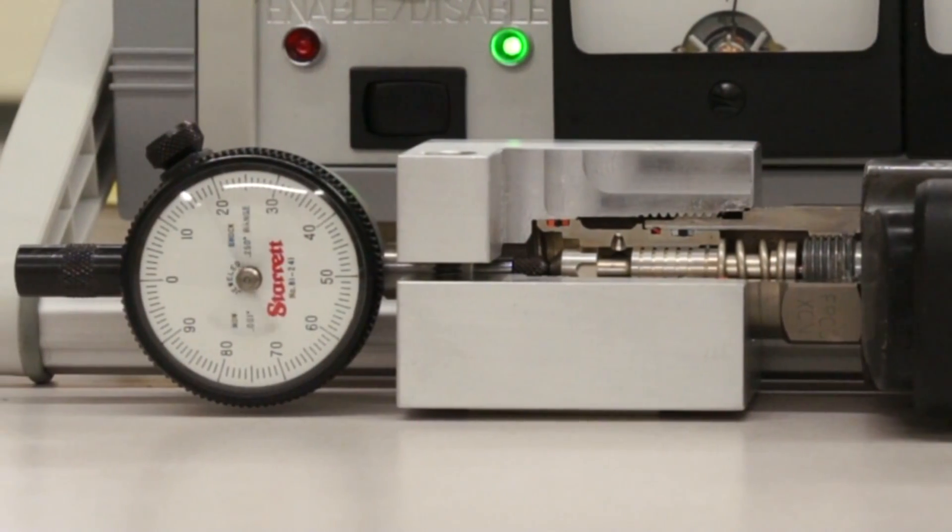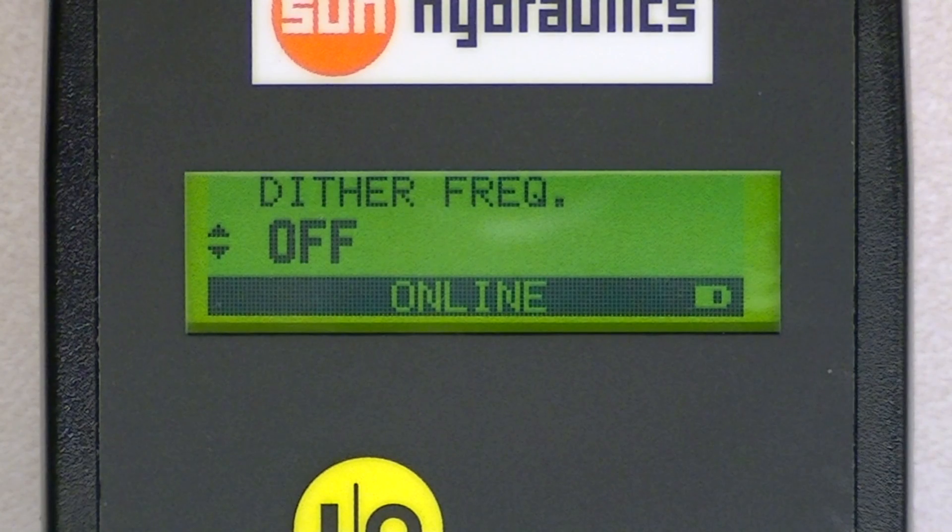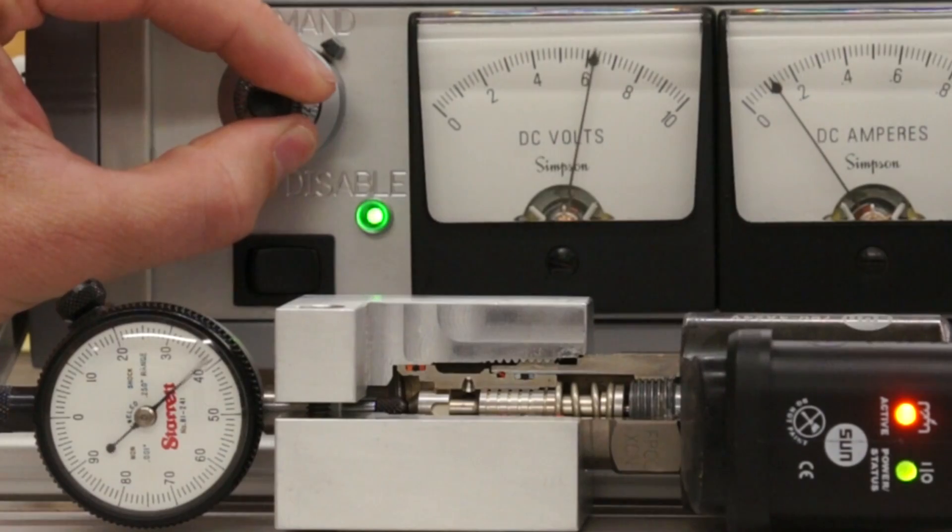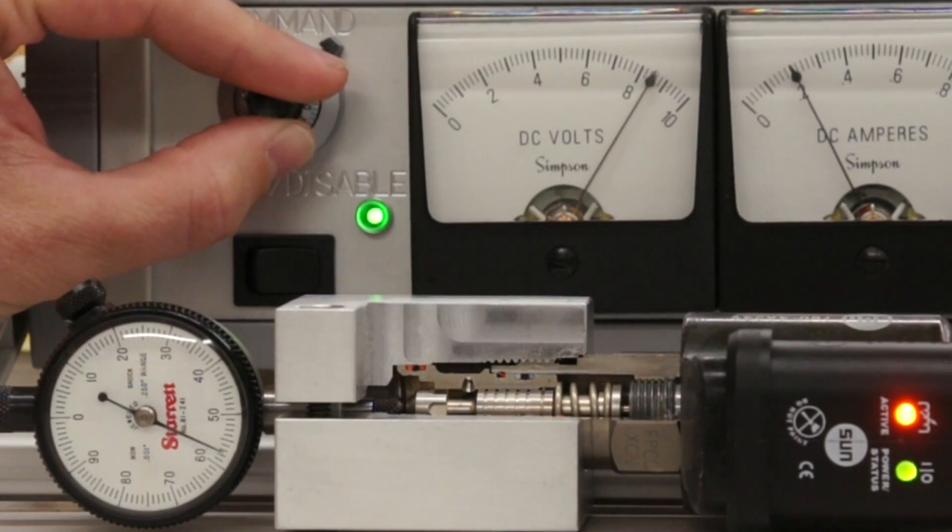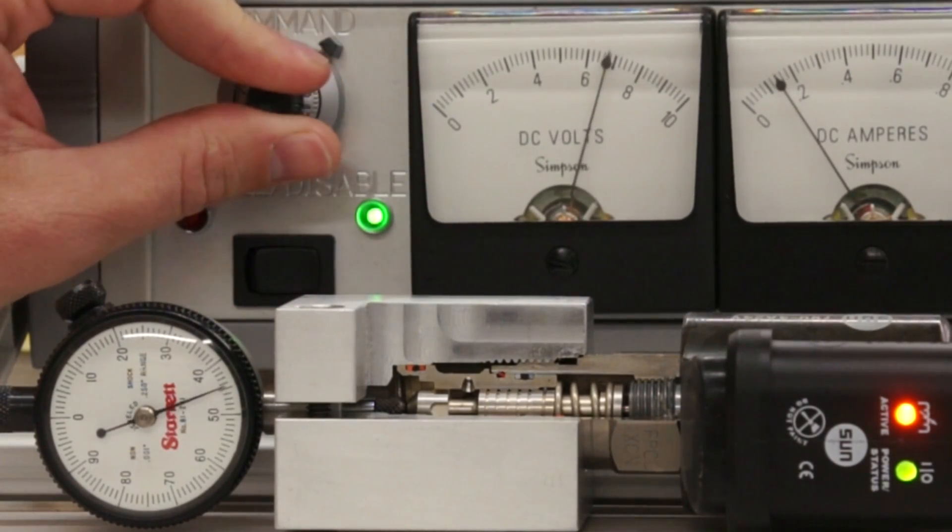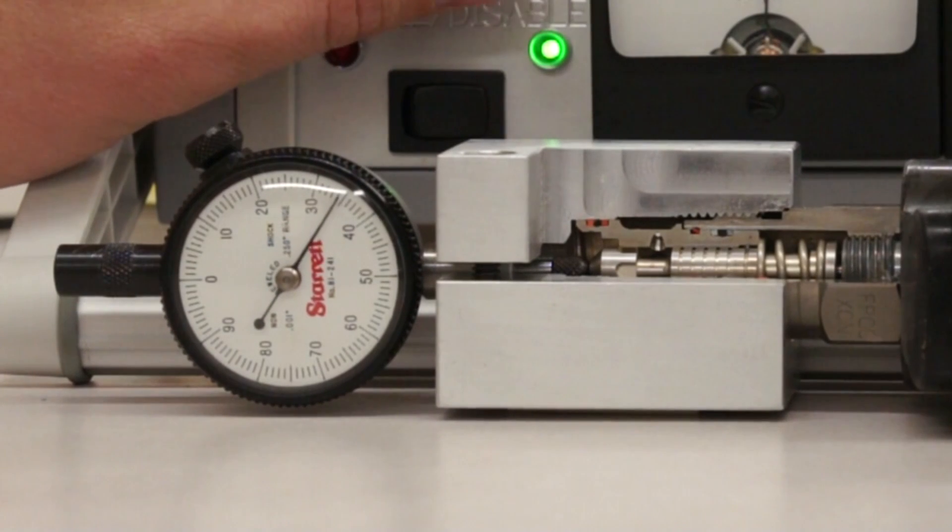You can also turn off the dither frequency. With the dither frequency turned off, what you'll notice is that as you sweep the input the spool will have a tendency to stick. Right there you can see that the spool is sticking as you're sweeping the input.